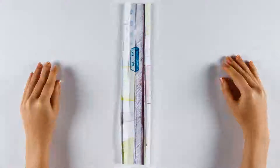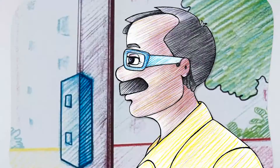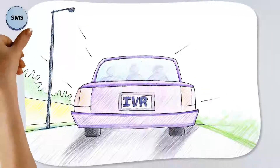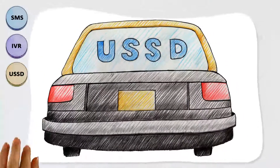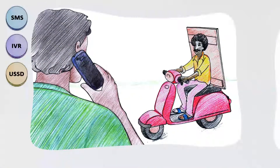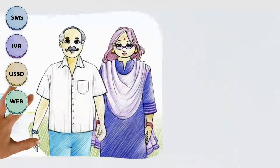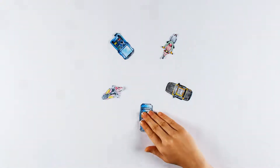With Reliance InstaCore services, you can manage your account anytime, anywhere, instantly. There are five ways to access Reliance InstaCore: through SMS, through Interactive Voice Response, through USSD, through the web, and through the mobile app.